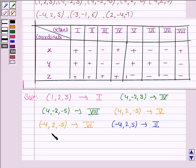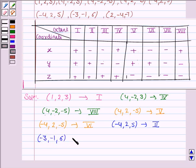The next point is (−3, −1, 6). Here, x and y are negative but z is positive, and this happens in the third octant.